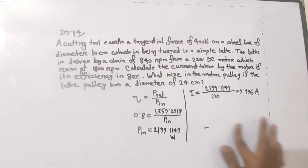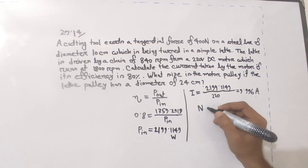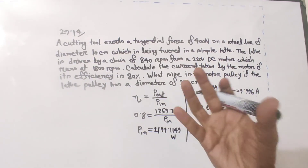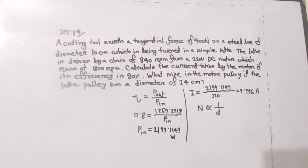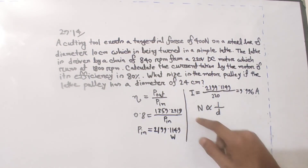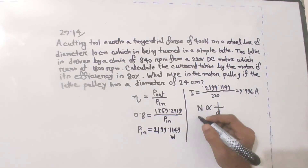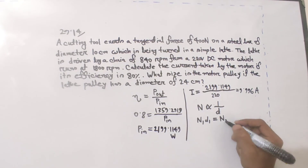I just read a simple formula — speed and diameter are inversely related. N1 × D1 equals N2 × D2. Our motor speed N1 is 1800 rpm and lathe speed N2 is 840 rpm, lathe pulley diameter D2 is 24 cm. Solving for motor pulley diameter D1 gives the answer. The basic formula: N1 D1 equals N2 into D2.